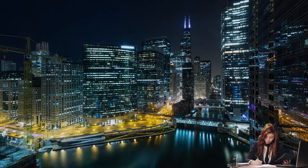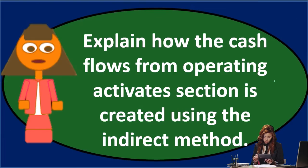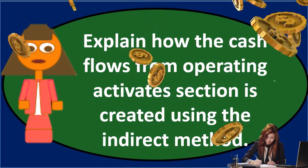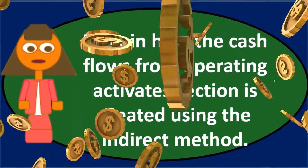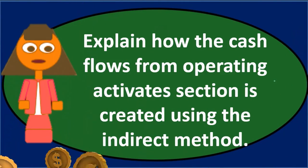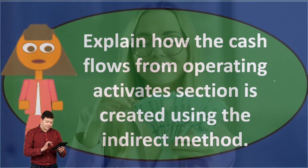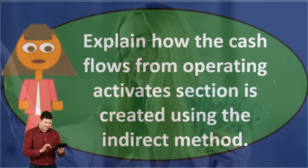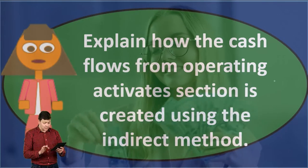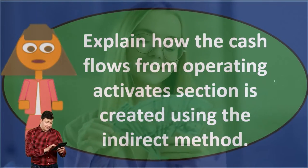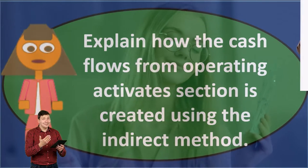From net income, we back out all accrual and non-cash items to arrive at net income on a cash basis, which is cash flows from operations. In this way we're reconciling — looking at the differences between net income on an accrual basis versus net income on a cash flow basis, identifying all the changes needed to reconcile the two.